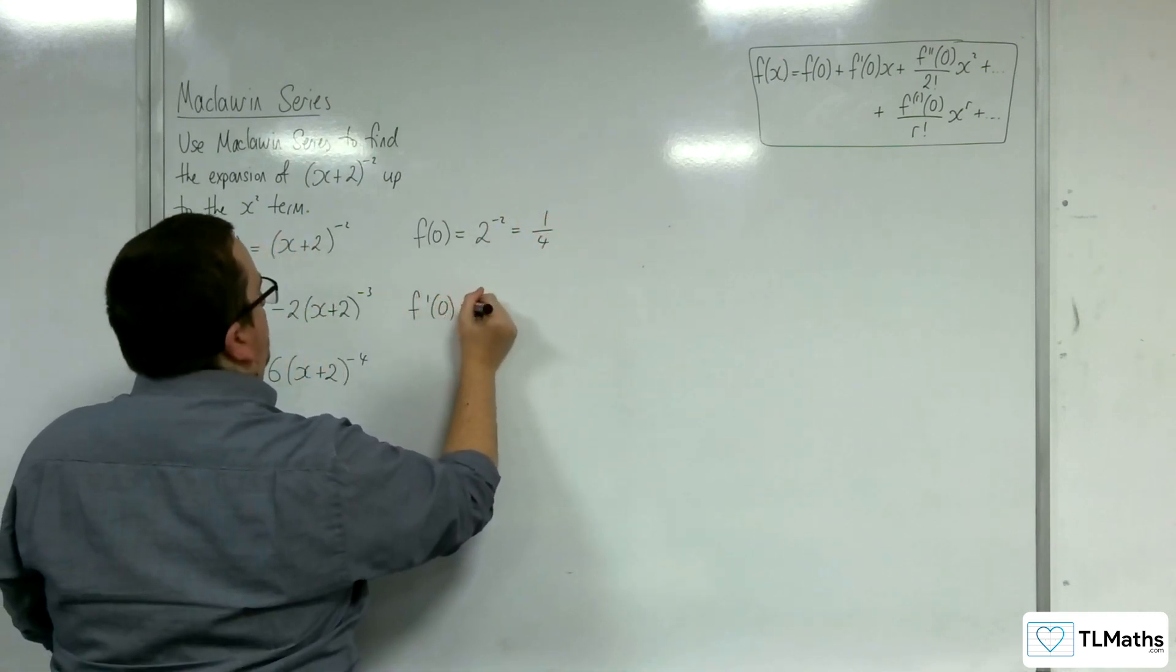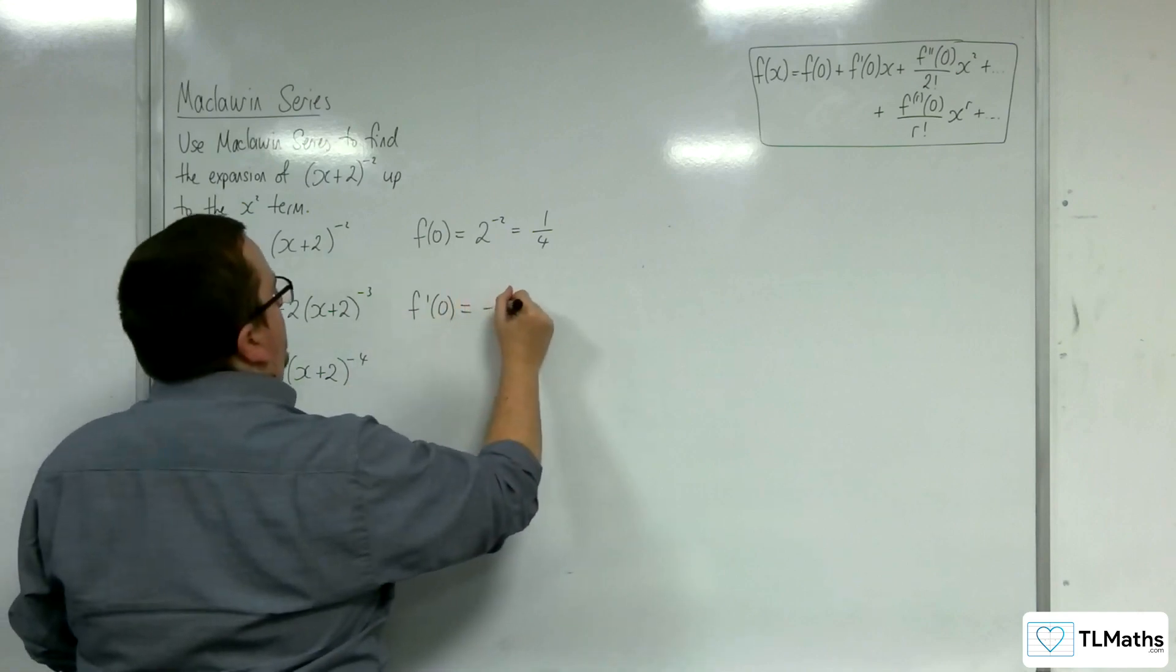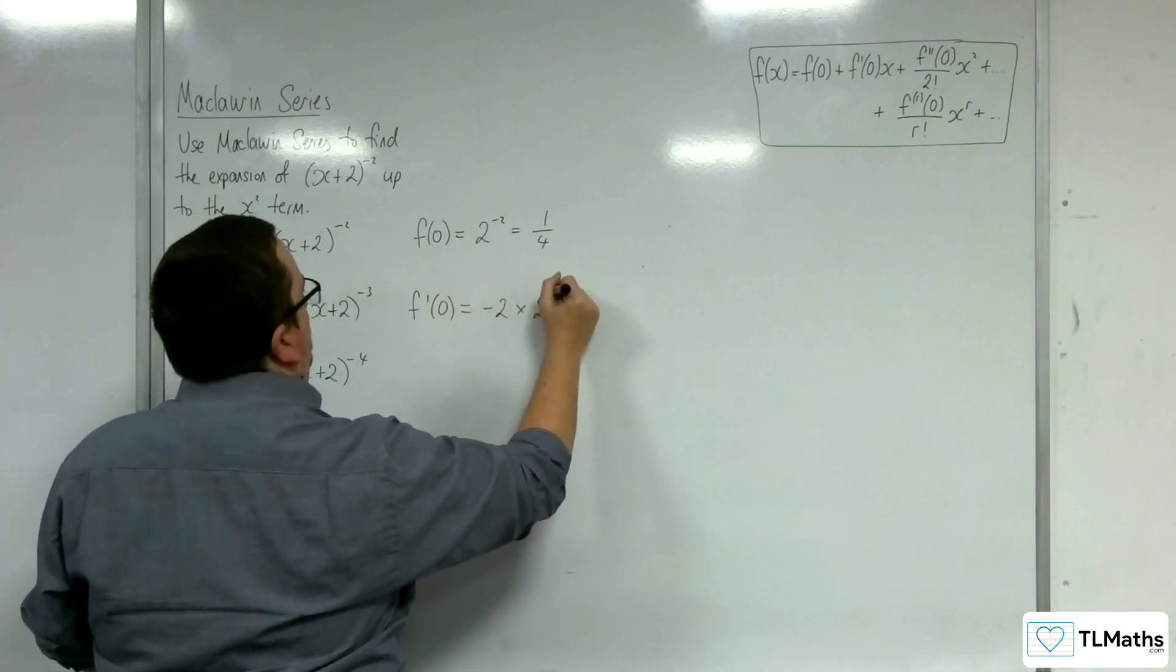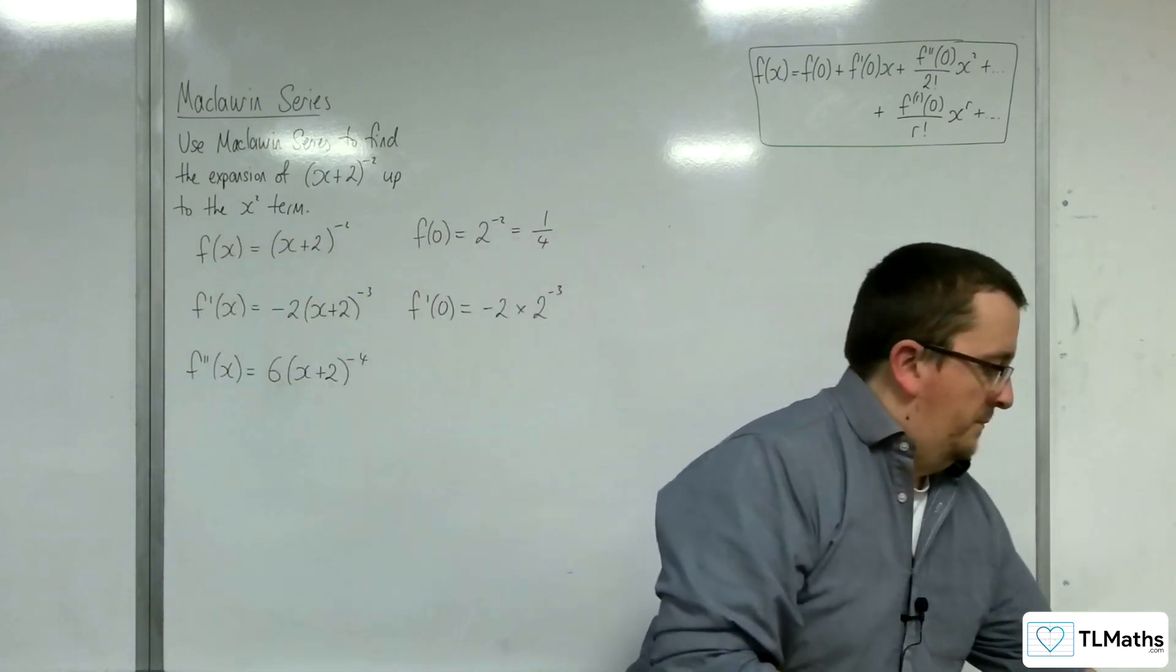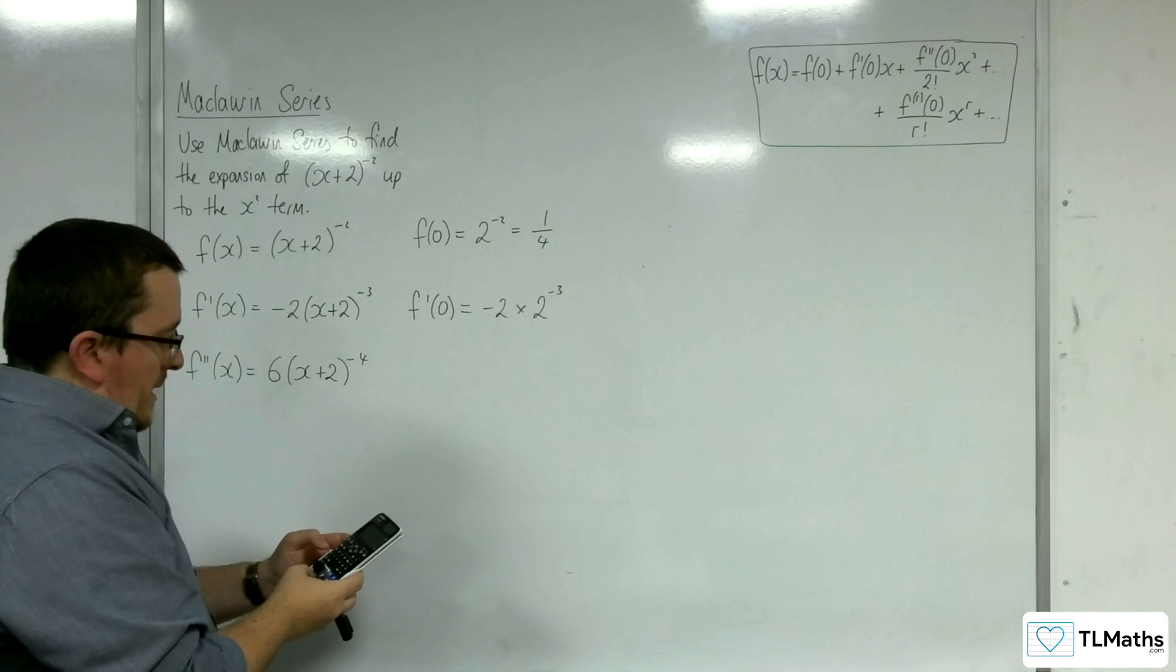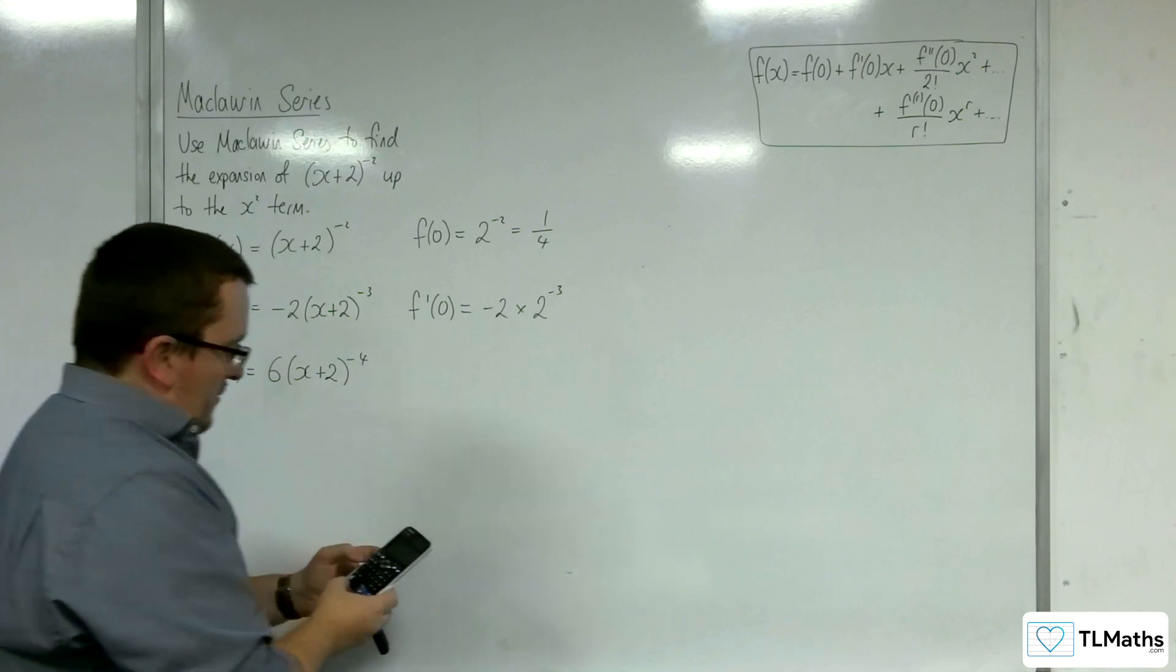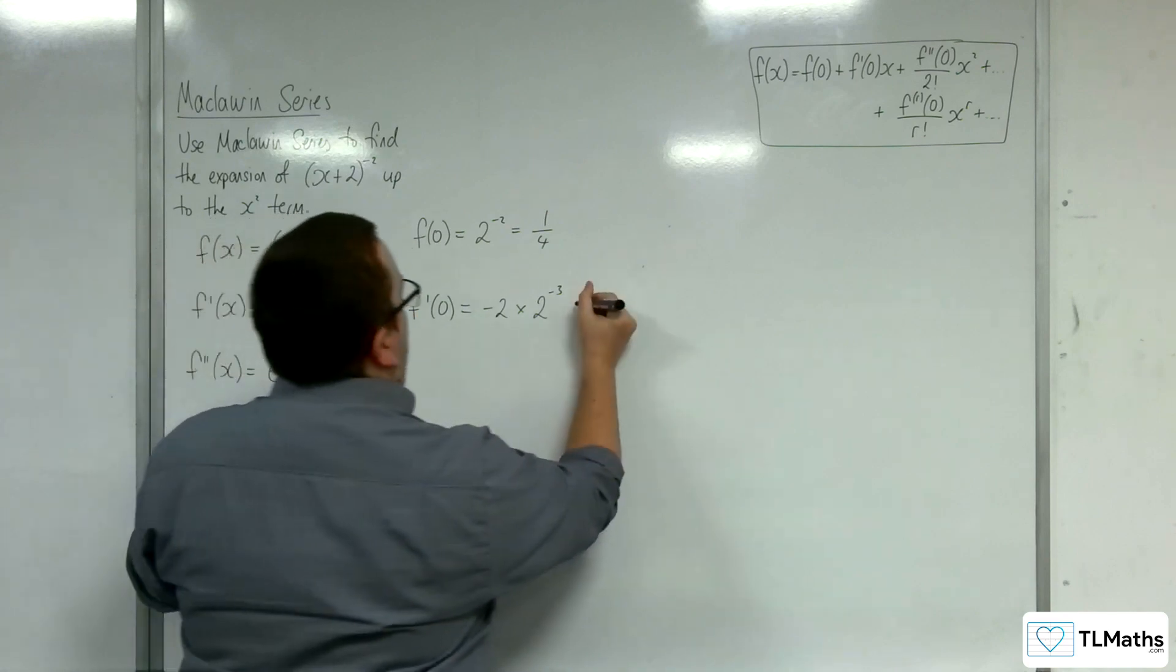So f'(0) is going to be -2 times 2^(-3). Okay, so I'm quickly going to lose track of this. So -2 times 2^(-3). So yeah, that's just -1/4.